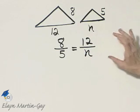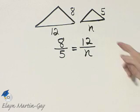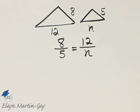By the way, this is one way of writing a proportion from these two similar triangles. There are many other ways also. Let's find the value, or this length, by solving for N.